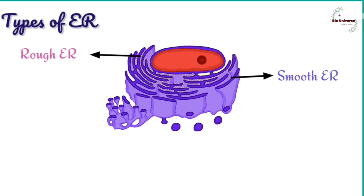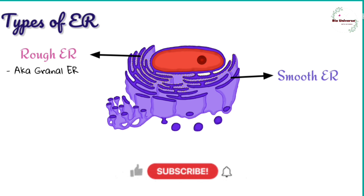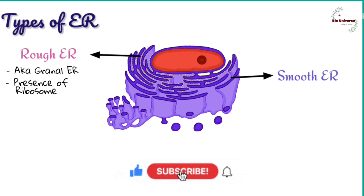Types of endoplasmic reticulum: the endoplasmic reticulum is of two types — rough and smooth. Rough endoplasmic reticulum, also known as granular endoplasmic reticulum, has a rough surface due to the presence of ribosomes on it.